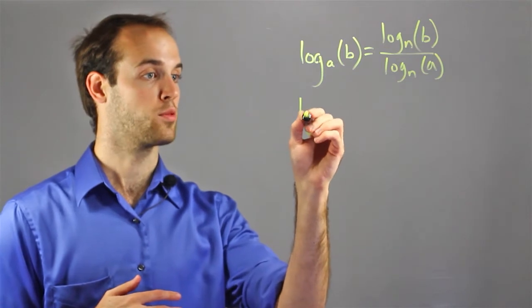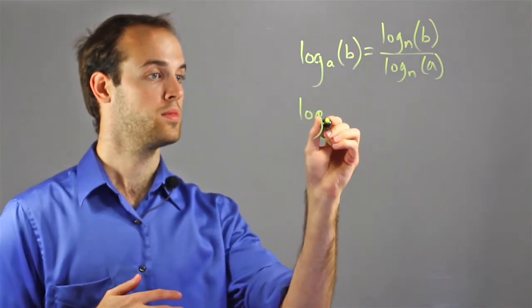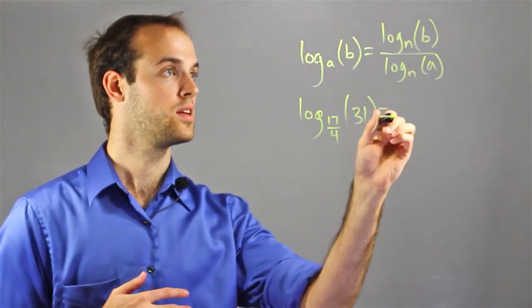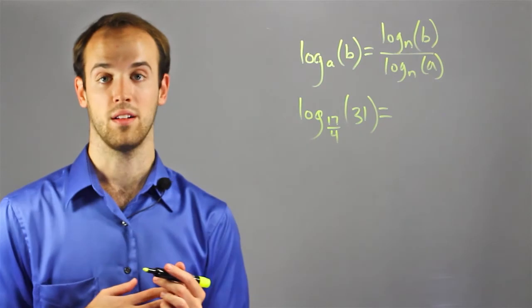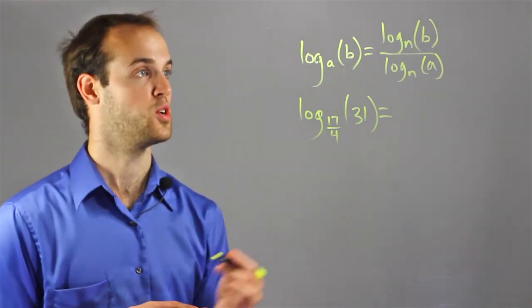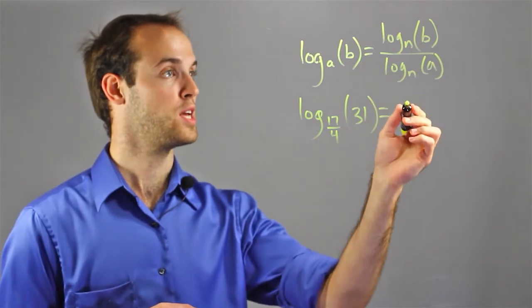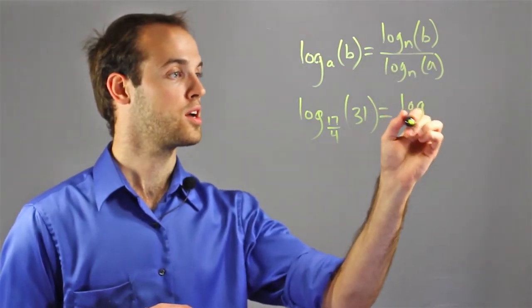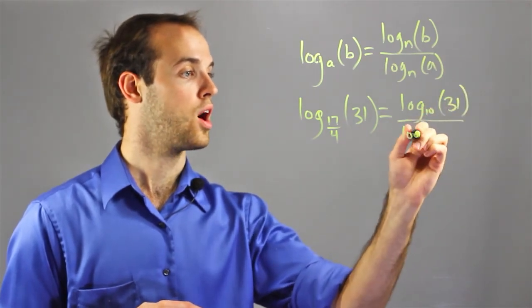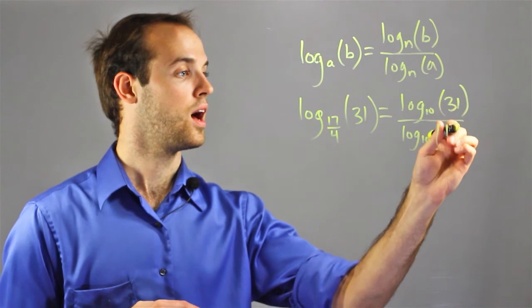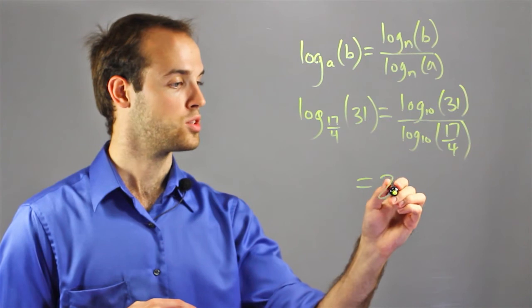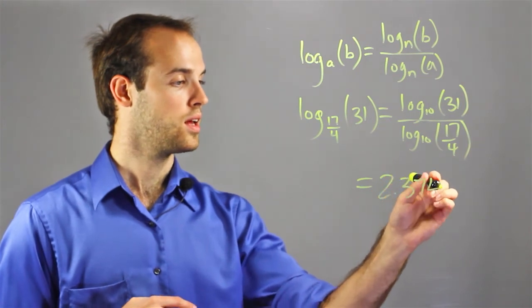Let's suppose that I have a really complicated logarithm. Log base 17 over 4 of 31 equals what? Well, if I only have a scientific calculator, the best thing I can do is to use base 10 and my change of base formula. I would say log base 10 of 31 over log base 10 of 17 fourths, and I would evaluate that to be about 2.374.